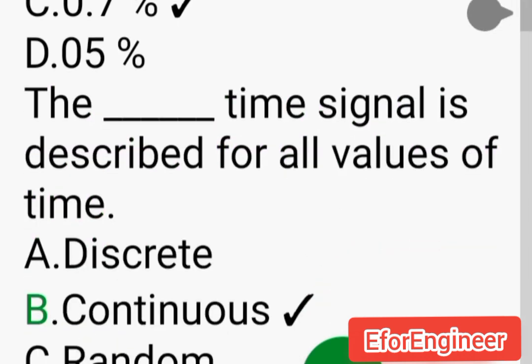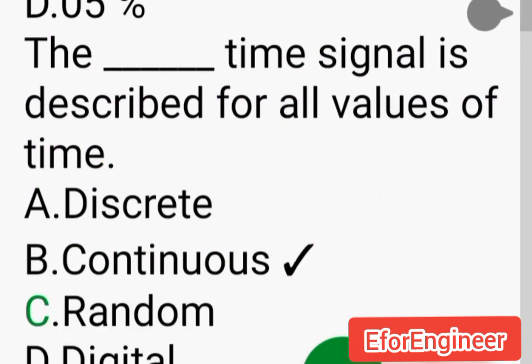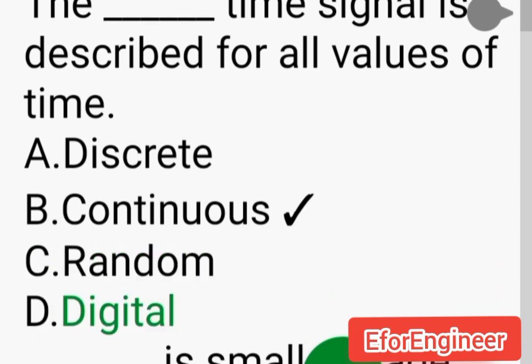The ___ time signal is described for all values of time: A. Discrete, B. Continuous, C. Random, D. Digital.